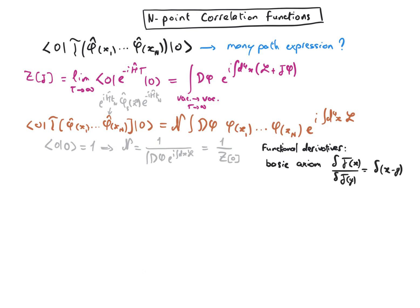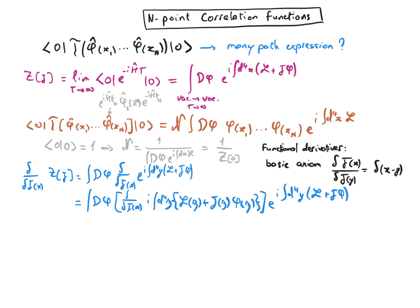So let's try to calculate the functional derivative of z with respect to the source j evaluated at some point of space time x. The functional derivative acts on the exponential in the same way that the normal derivative does. Note that when we write the derivative of the exponent, we change a variable from y to z because these are dummy variables and they should be different.